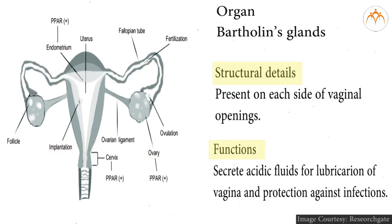Bartholin's glands are present on each side of the vaginal opening. They secrete acidic fluids for lubrication of the vagina and protection against infections.